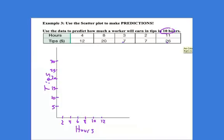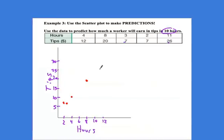And now it's just plotting the dots. So at 4, I can go up to 12. At 8 hours, I can go up to $20. Notice, if he works 8 hours, he's not necessarily going to make 20 bucks in tips all the time. He might make 3 bucks in tips. He might make 50 bucks in tips. So this is a scatter plot because these dots are not the only ones for these values.